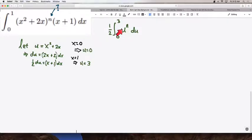To anti-differentiate u to the n, you simply increase the power by 1, so it's u to the n plus 1, and then divide by that new increased power, that's n plus 1, and we evaluate from 0 to 3.